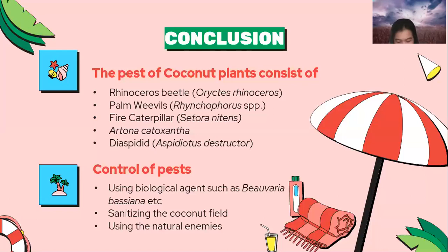In conclusion, the pests of coconut plants consist of five pests: rhinoceros beetle, palm weevil, fire caterpillar, Artona catoxantha, and diaspidid. The control of these pests uses biological agents such as Beauveria bassiana, sanitation of the coconut field, and natural enemies. Thank you for your attention. Wassalamualaikum warahmatullahi wabarakatuh.